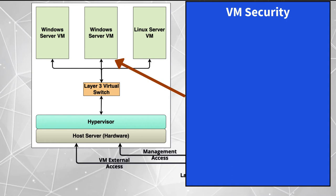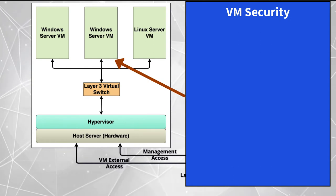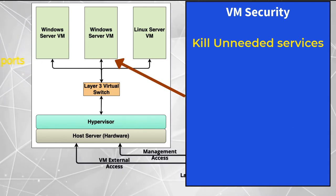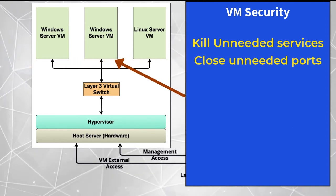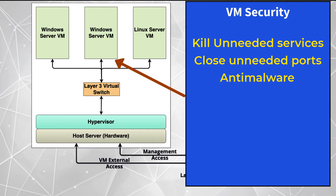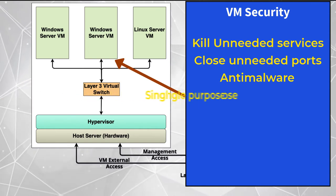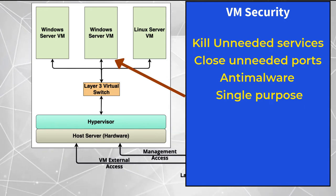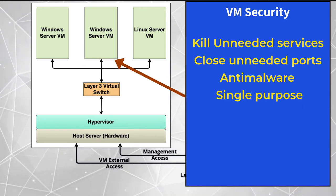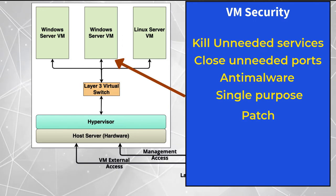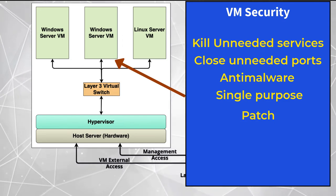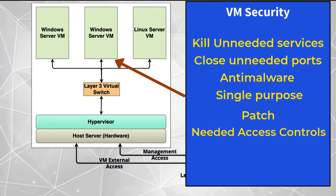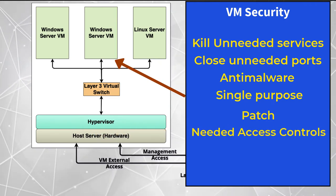Organizations must harden VMs just as they would any other network-connected device — including killing unneeded services, closing all unneeded ports, implementing anti-malware, using each VM for a single purpose, running only the applications needed to achieve that purpose, and patching — including the patching of VM files stored on disk. Authentication and authorization for access should be at a level appropriate to the associated risk.